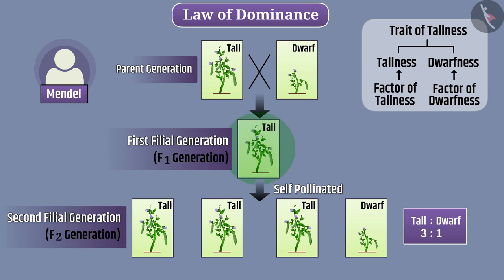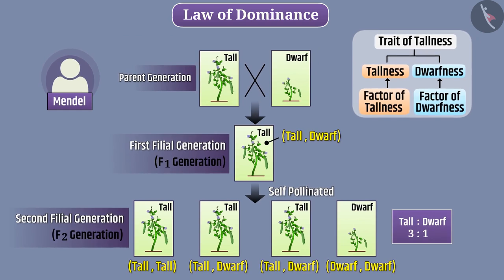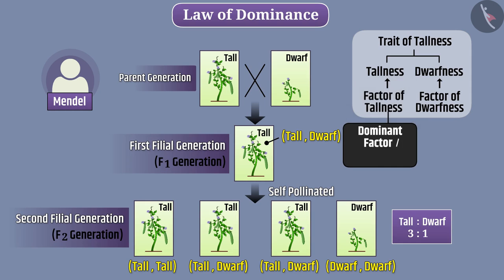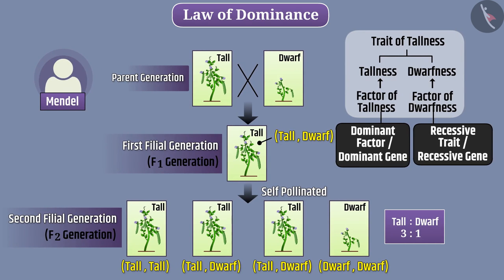According to the law of dominance, in every individual, the characters are controlled by factors. Due to the involvement of two parents in sexual reproduction, factors are found in pairs. There are different forms of a trait, so the factors of that trait also have different forms — these are called alleles. An allele is a pair of factors that may be similar or different. If the two alleles in a pair are different, then only one factor is allowed to get expressed. The factor that gets expressed is called the dominant factor or dominant gene, while the factor that remains idle is called the recessive trait or recessive gene. Only one copy of the dominant factor ensures expression of the dominant character. For the expression of the recessive trait, both factors in the pair must be recessive.